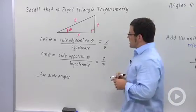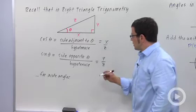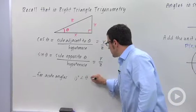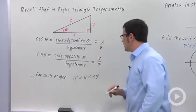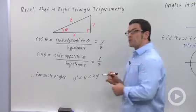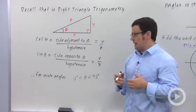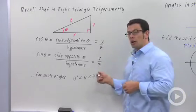The problem with this definition is that it only works for acute angles. So that means that theta has to be between 0 and 90 degrees, or else this triangle won't make sense. So one of the things we do in pre-calculus is extend this definition so that it includes all angles.